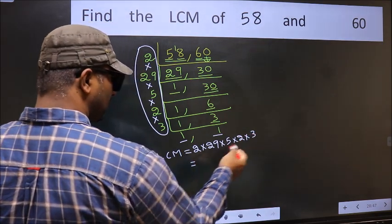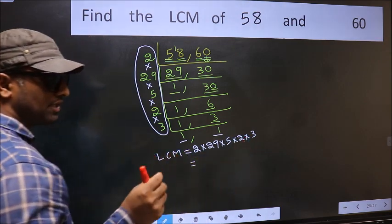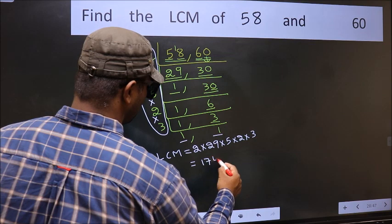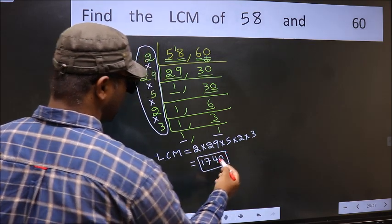When we multiply these numbers, we get 1740 is our LCM.